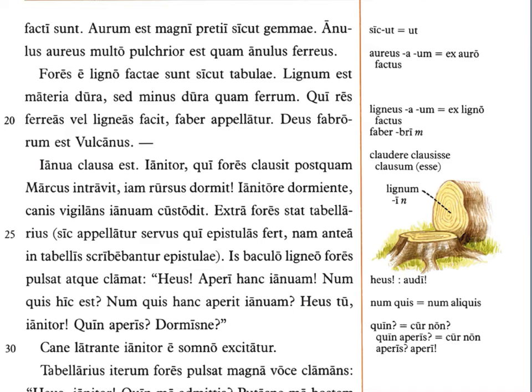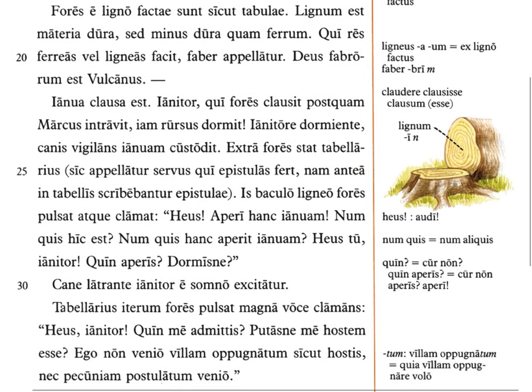Deus fabrorum est Vulcanus — the god of craftsmen or artisans is Vulcan. For the Romans, this would include both smiths and carpenters. Ianua clausa est — the door is closed. Ianitor qui fores clausit, the doorkeeper who closed the doors, postquam Marcus intravit, after Marcus entered, iam rursus dormit, is now sleeping again.